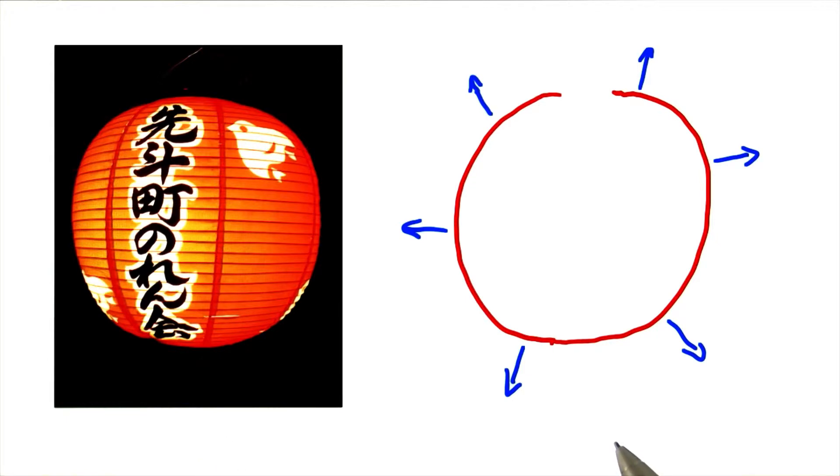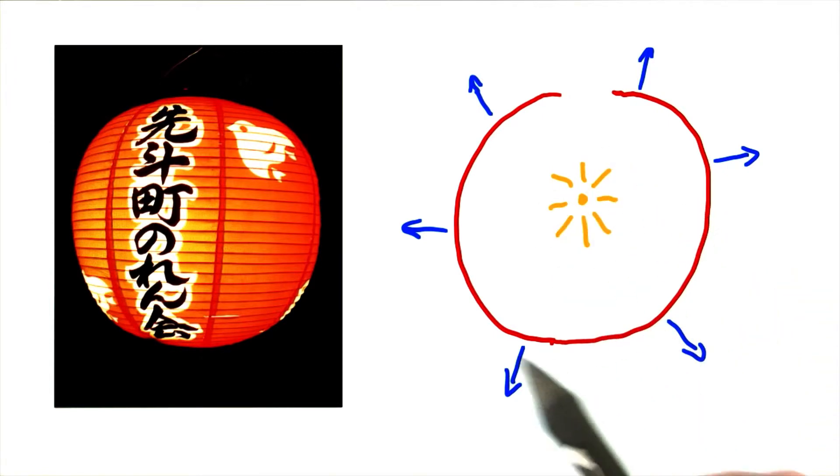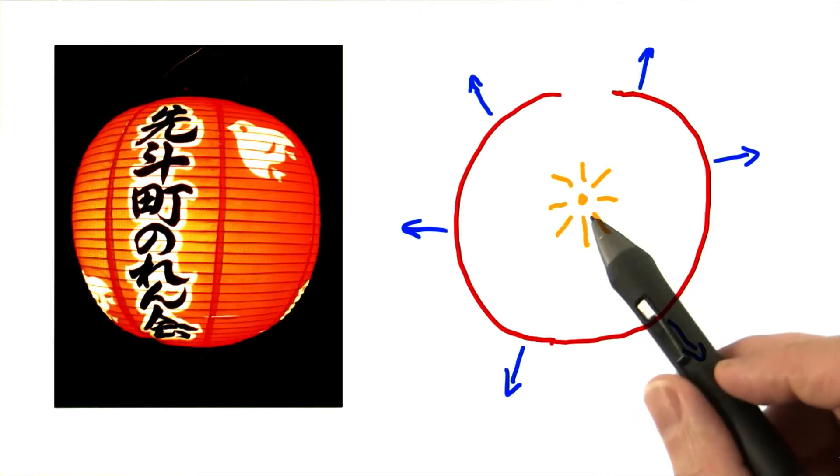However, if you think about it, the shading here is really not like anything in the real world. For example, if we put a light inside this lantern, all of the surfaces would be dark. This is because their normals all point away from the light.